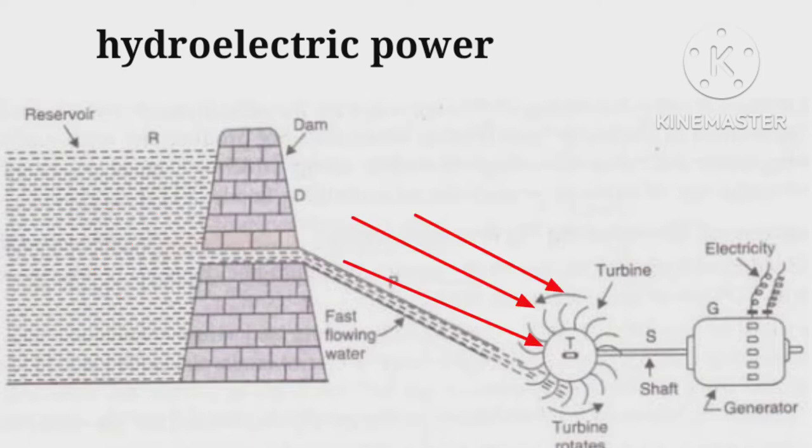The water is then allowed to fall. The potential energy of water stored is converted into kinetic energy that runs a turbine at the bottom of the dam, and then mechanical energy is converted into electrical energy.